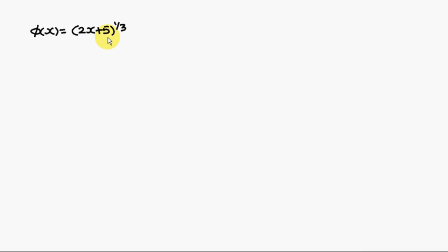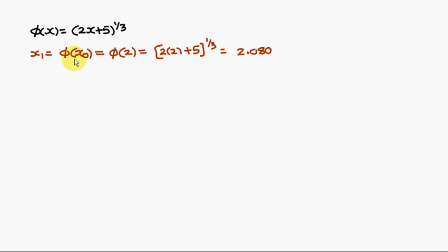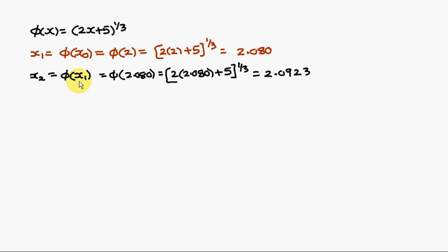With phi(x) = (2x + 5)^(1/3) and x0 = 2, we compute: x1 = phi(x0) = (2·2 + 5)^(1/3) = 2.080. Then x2 = phi(x1) = phi(2.080) = 2.0923.